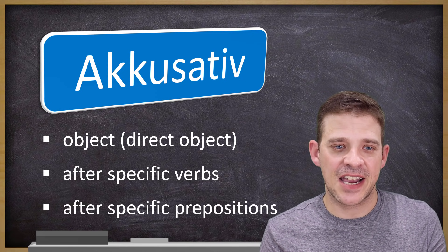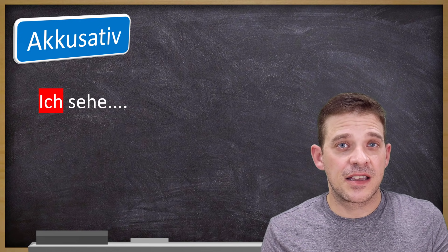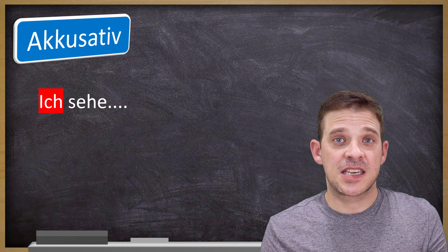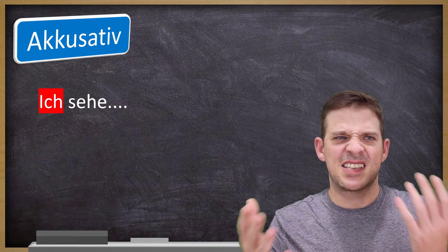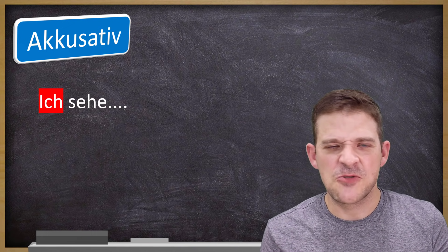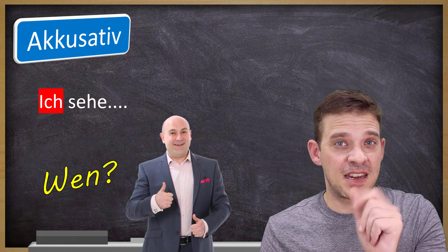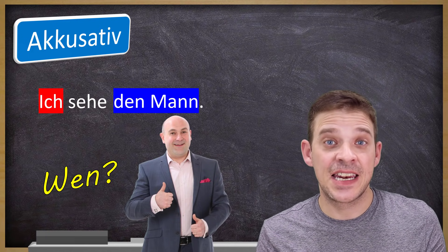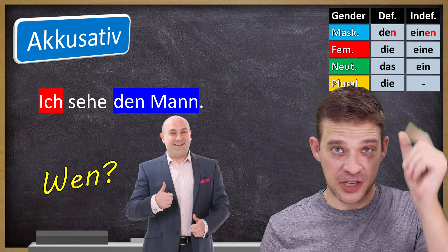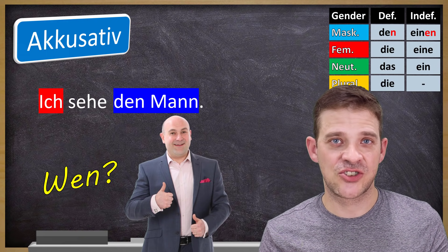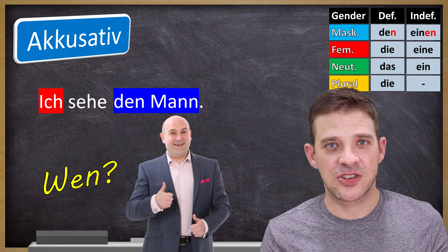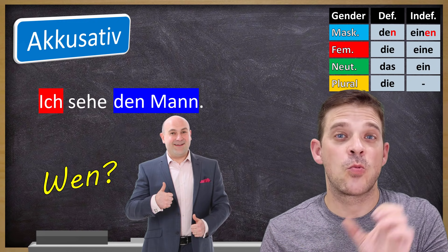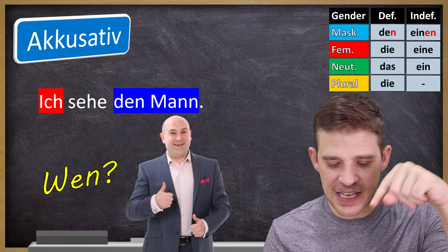Let's do an example. We take the verb 'sehen' — to see — which like most verbs takes the accusative. 'Ich' in red is the subject. But the sentence 'ich sehe' is not complete — you need an object. You can ask 'wen siehst du?' — who do you see? — and I see this man, so: 'Ich sehe den Mann.' The articles only change in masculine for accusative, so masculine nouns require an article change.